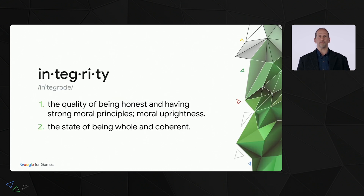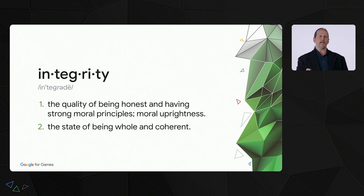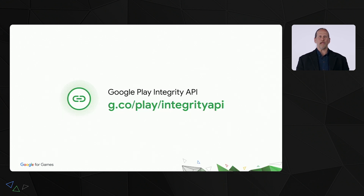In conclusion, you've spent time and energy designing an entire ecosystem for your players. The Play Integrity API provides signals you can use to ensure that your honest players are enjoying the coherent experience you've created for them. The Play Integrity API is available now. Find out more at g.co/play/integrityAPI.